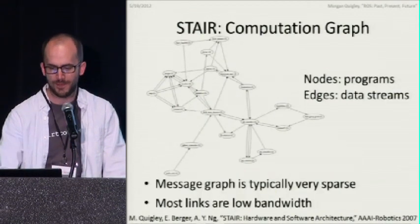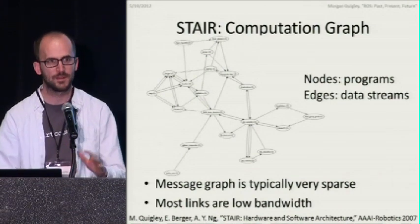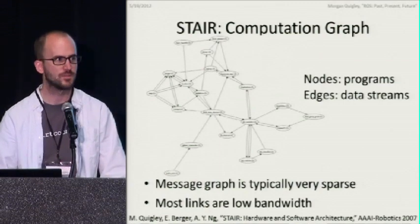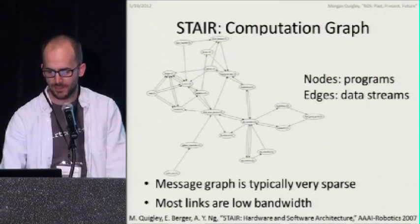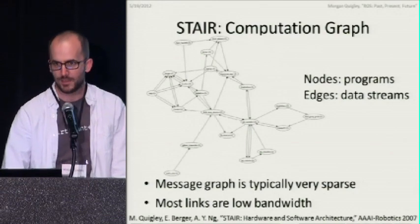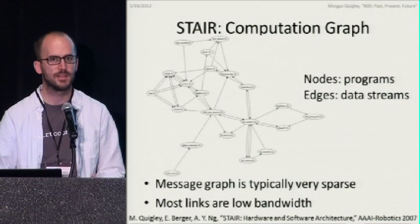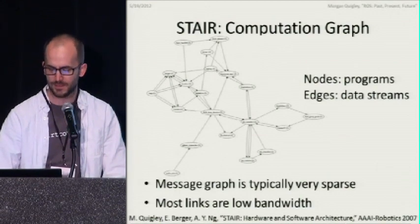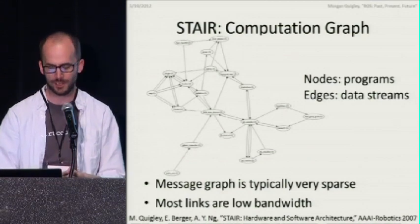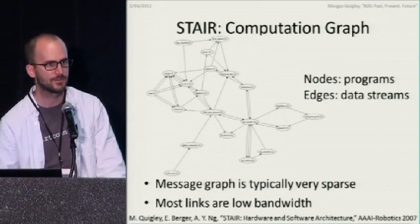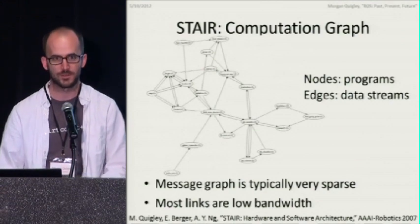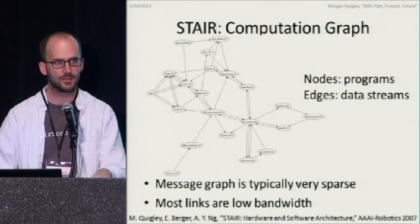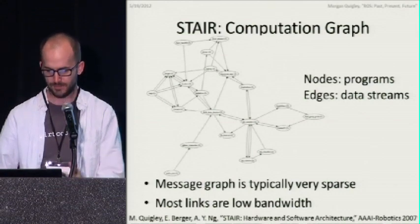The computation graph is essentially the graphical version of what the supervisory node used to store as a text file. The nodes — the circles in the graph — are the programs, the Unix processes; the edges are data streams connecting on the fly as things pop up. The key insight is that this is a sparse graph, and sparsity means we can cut the graph into pieces, put them on different computers, and get real parallelism benefits. In robotics, there are cliques — like a navigation system with five or ten programs that talk to each other a lot but barely communicate with a vision or manipulation system. Most links are also low bandwidth, meaning you can often fork them apart and put part of the computation off the robot.